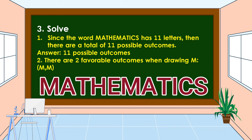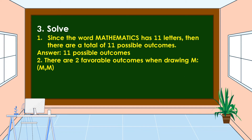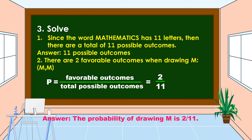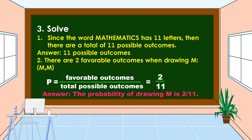The formula in finding the probability of drawing M is: P is equal to favorable outcomes over total possible outcomes. The favorable outcomes is 2 and the total possible outcomes is 11. Therefore, the probability of drawing M is 2 over 11.